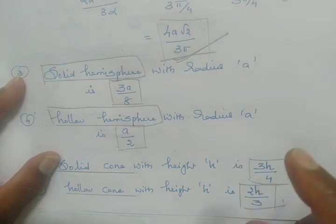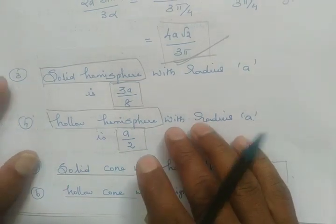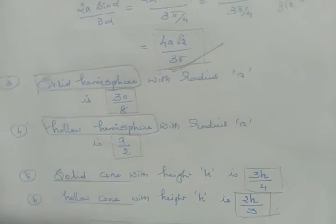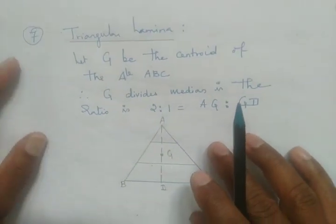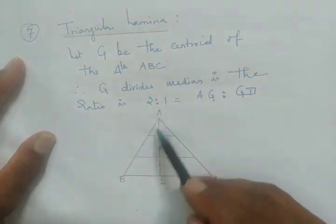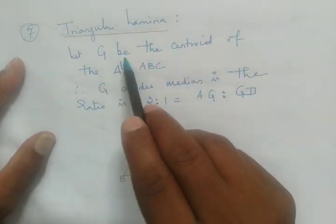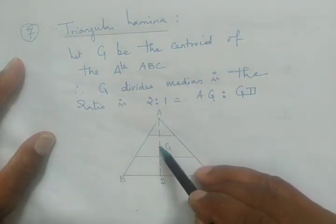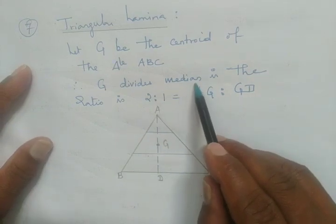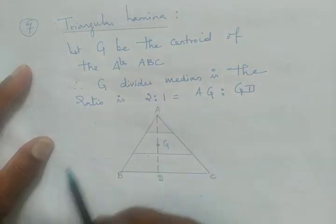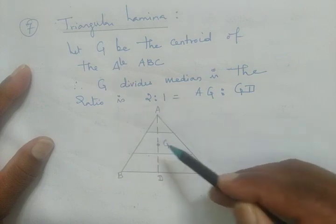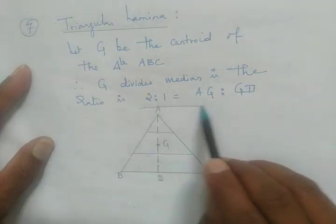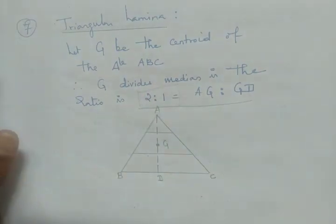To summarize: that is a semicircle, that is a quadrilateral area, solid hemisphere, hollow hemisphere, solid cone, hollow cone, and the first one is triangular lamina. For a triangular lamina, let G be the centroid of triangle ABC. Then G divides the median in the ratio of two is to one — that is, AG to GD equals 2:1. This is the ratio for triangular lamina, and you can see this in the standard results.